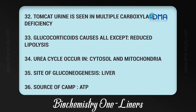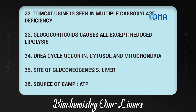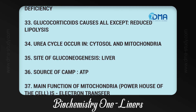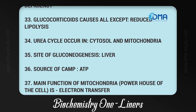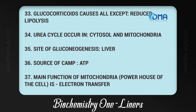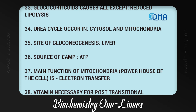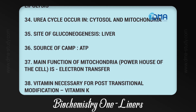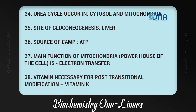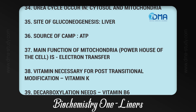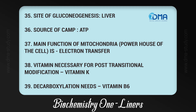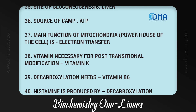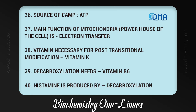35. Urea cycle occurs in cytosol and mitochondria. 36. Site of gluconeogenesis is the liver. 37. Source of cAMP is ATP. 38. Main function of mitochondria — powerhouse of the cell — is electron transfer. 39. Vitamin necessary for post-translational modification is vitamin K. 40. Decarboxylation reactions need vitamin B6.